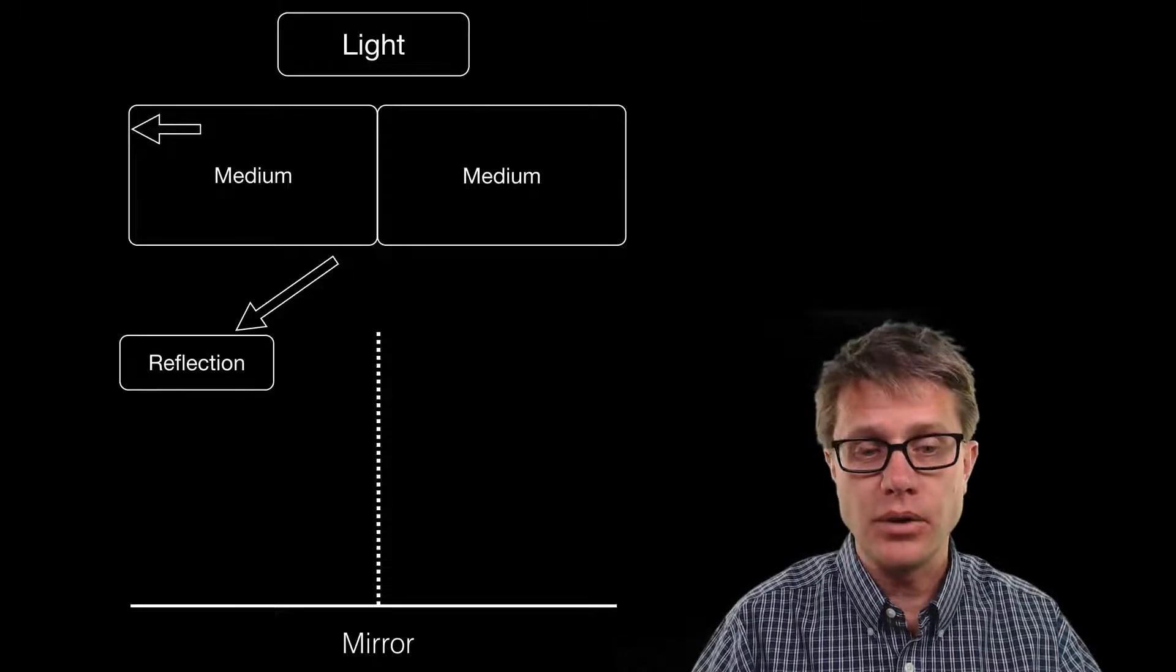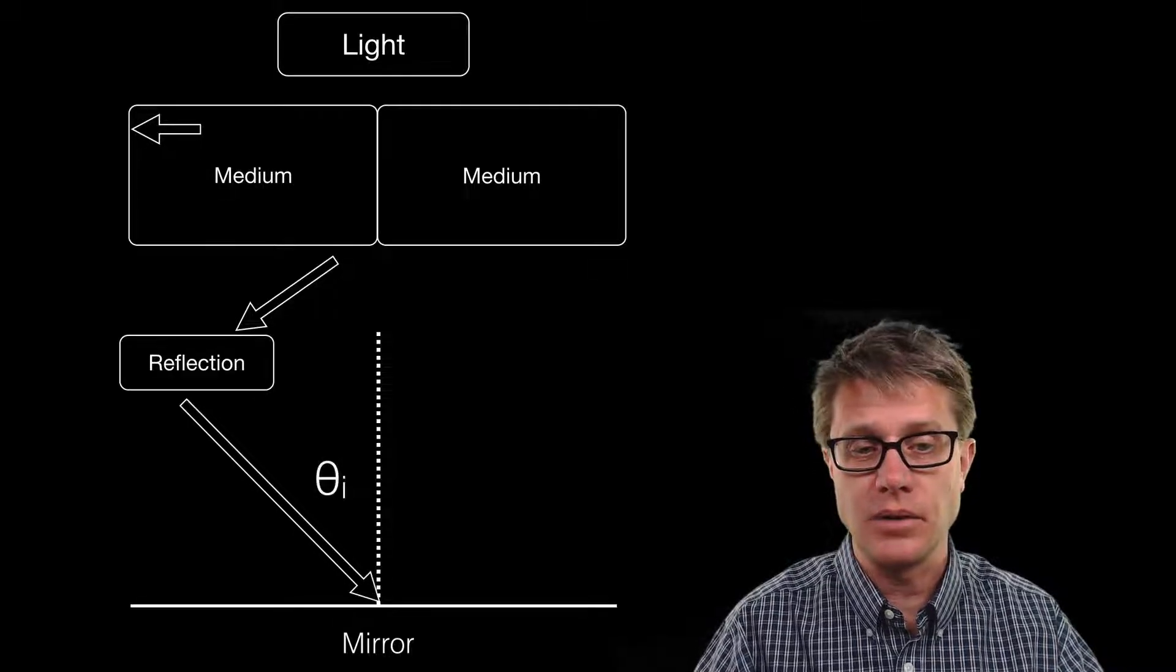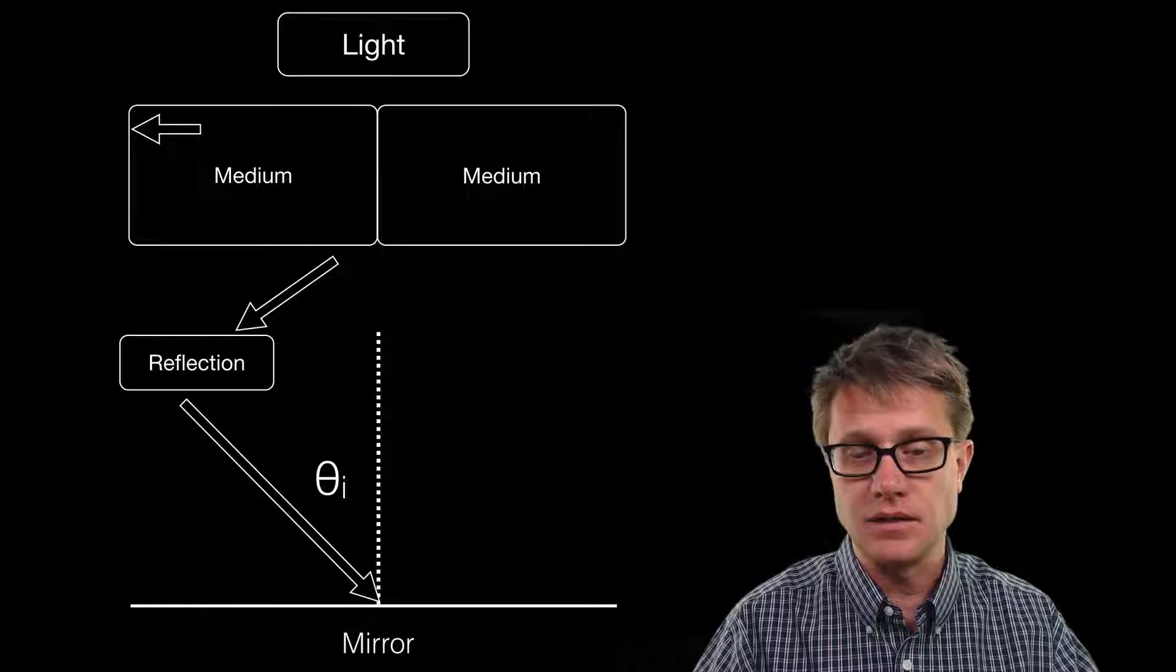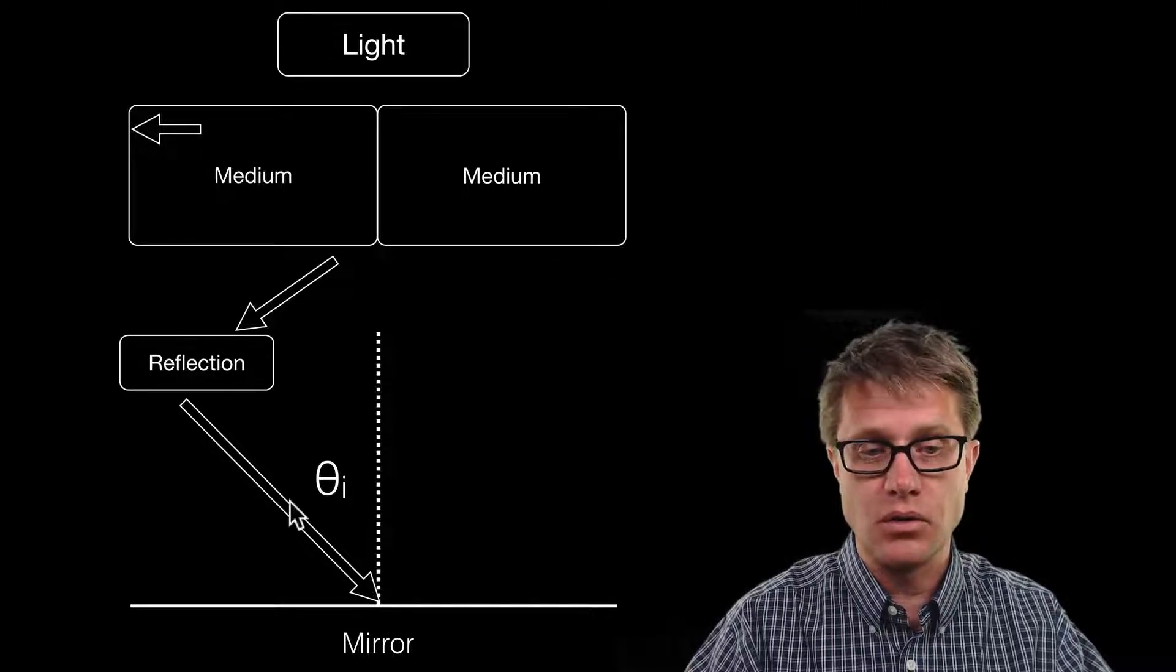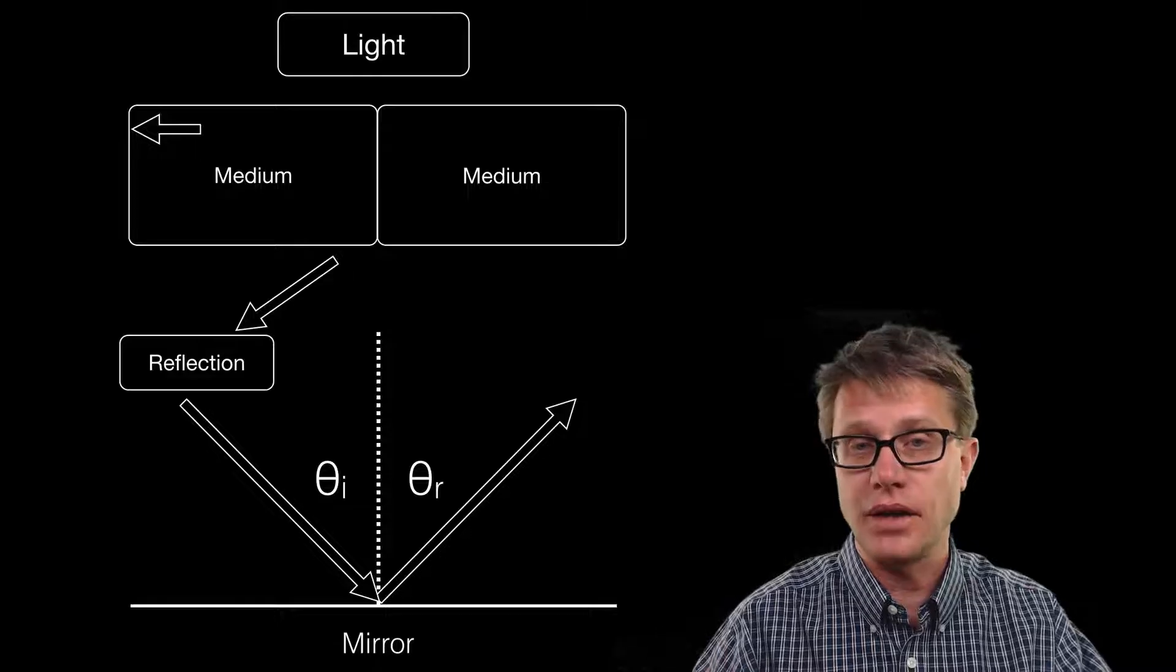And so the key point is that if you ever have a mirror and we have light coming in, we can represent that as a light ray. And that angle of incidence, in other words the angle between the normal and the light ray, is going to equal the angle of reflection.